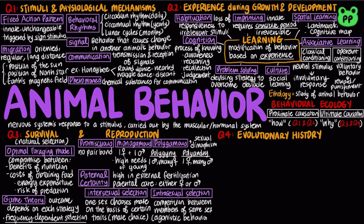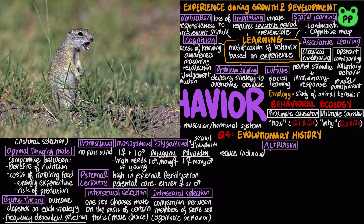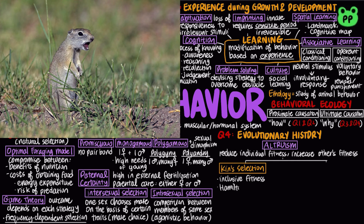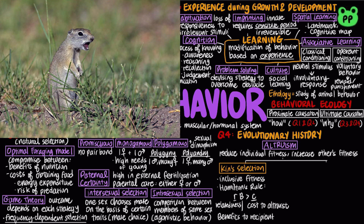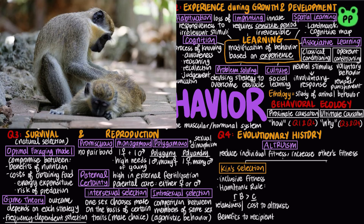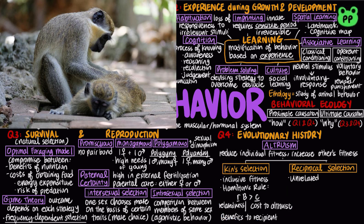On some occasions, animals behave in ways that reduce their individual fitness but increase the fitness of others — this is known as altruism. For example, some animals risk their own lives to make alarm calls to warn others. Altruism can be explained by two mechanisms. Kin selection, also known as inclusive fitness, favors altruism under Hamilton's rule: the product R×B must be greater than C, where R is relatedness between the recipient and the altruist, B is the benefit to the recipient, and C is the cost to the altruist. It accounts for an individual's total effect on proliferating its genes by producing offspring and helping close relatives. Altruistic behavior toward unrelated individuals can be explained by reciprocal altruism, limited to species with stable social groups where individuals meet repeatedly and cheaters who don't reciprocate are punished.